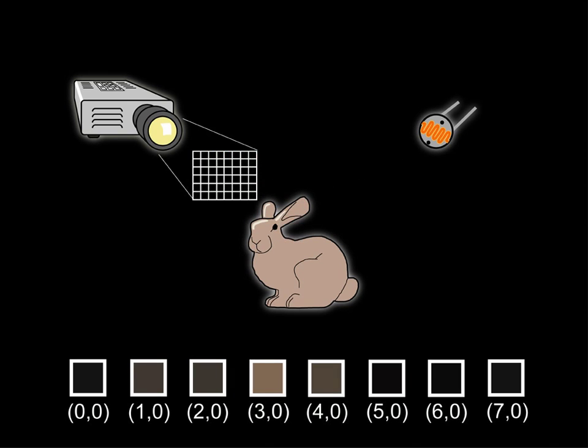Helmholtz reciprocity specifies that the light transport will be the same along a light path regardless of the direction of the flow of light. This means that the same value would be measured whether the light starts off at the projector pixel and goes to the photosensor or if it starts from the photosensor and arrives at that projector pixel. The transfer of energy from one to the other will be the same in either direction.